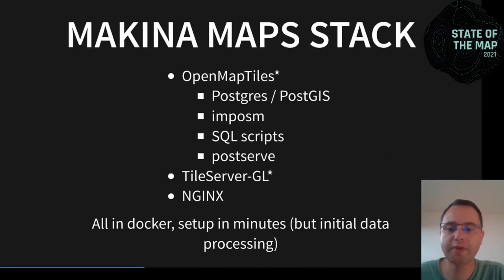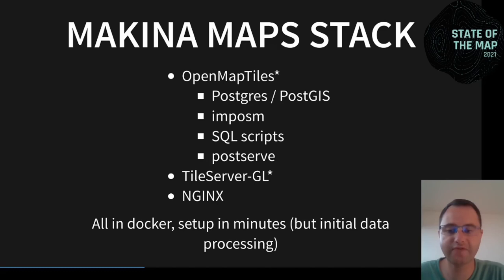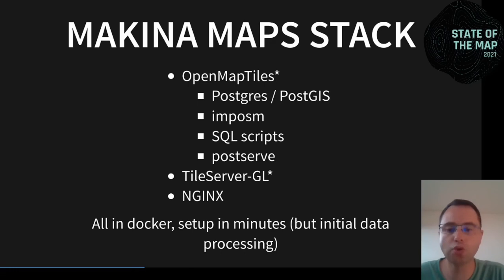So we use OpenMapTiles as a base for our project MachinaMap. MachinaMap uses the same foundation from OpenMapTiles but does not export to MBTiles. Instead, we use an NGINX web server to read from PostServe on request. We also use TileServerGL, not to serve from MBTiles but to serve sprites, for example. The entire stack is set up in Docker to help deployment, and you can set up a tile server with on-request rendering in minutes — though the data loading time depends on the extract, from minutes to hours or even a day for the planet.